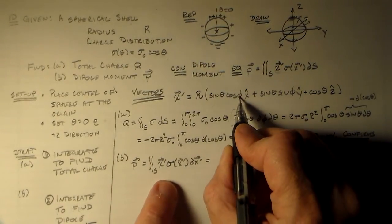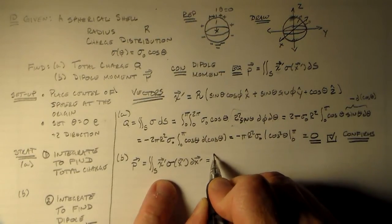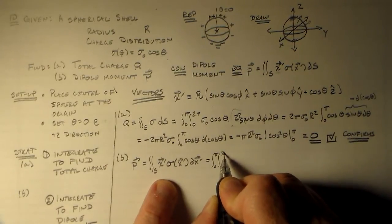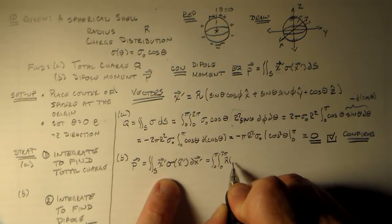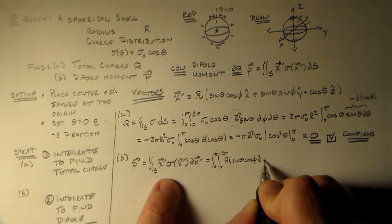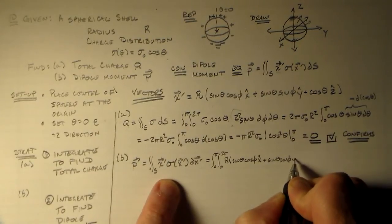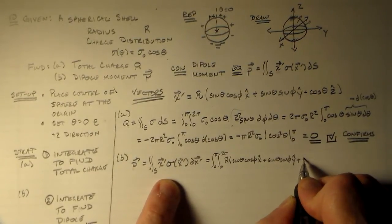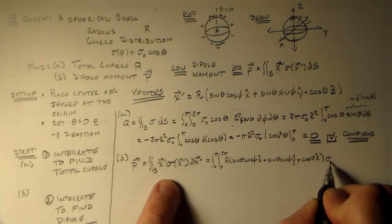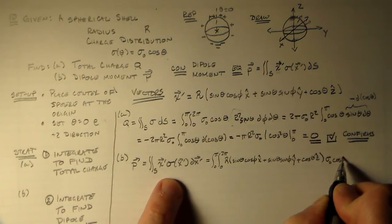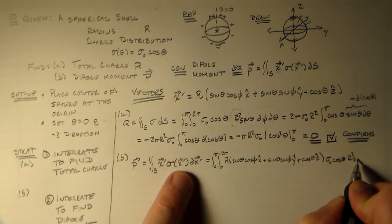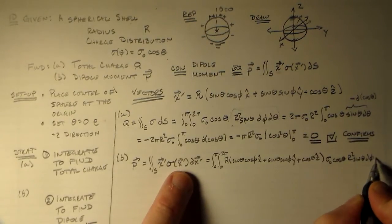And so now we have to take this guy and shove it in here. So let's start it all off to go over all of the angles on that surface. And then we multiply by the radius times all of these fun things. Sine theta cosine phi x hat plus sine theta sine phi in the y hat direction. Plus cosine theta z hat. And then we have sigma naught cosine theta. And our differential element here, our area element. So r squared sine theta d phi d theta.